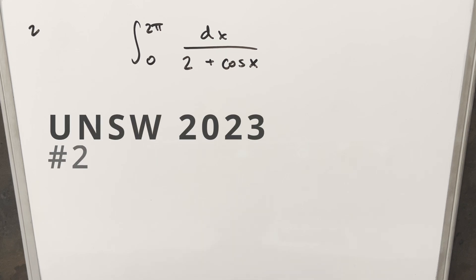We have for today an interesting integral from the UNSW integration 2023. This was problem 2. We have the integral from 0 to 2π, 1 over 2 plus cosine x dx.